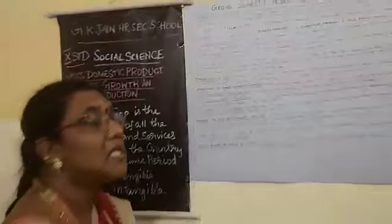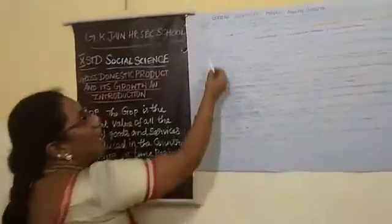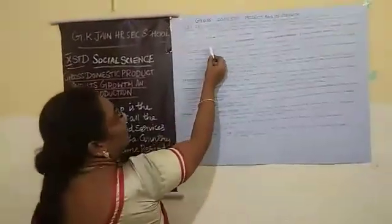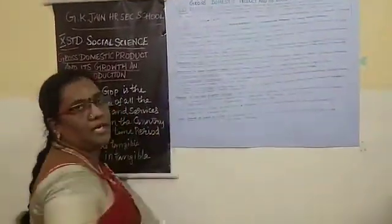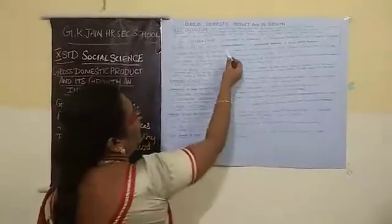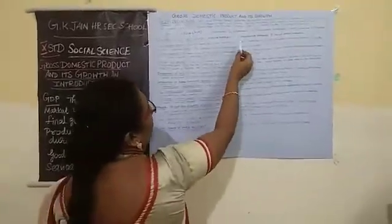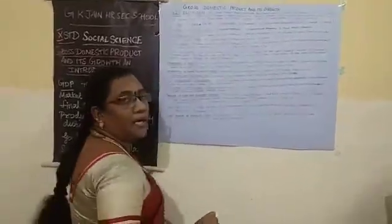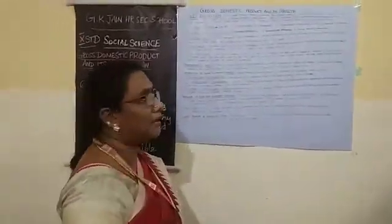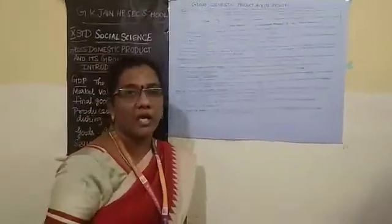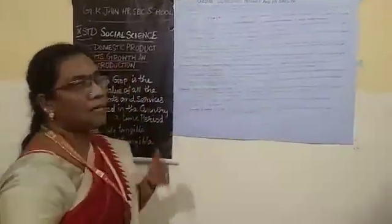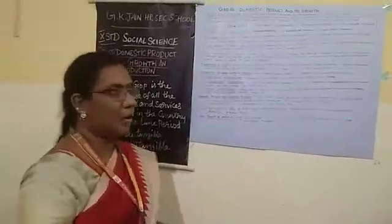Next we will see the methods of GDP calculation. There are three methods: expenditure method, income method, and value added approach method. We will see them one by one.